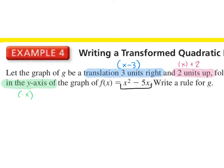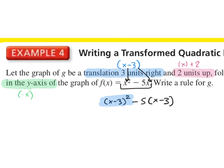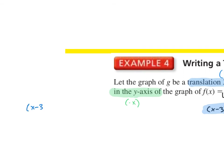We're going to start with what happens on the inside. We need to take x minus 3 and plug that into both x's in our function. So we have x minus 3 squared minus 5 times x minus 3. I'm only doing the translation three units right right now — I just plugged x minus 3 into both of our x's.